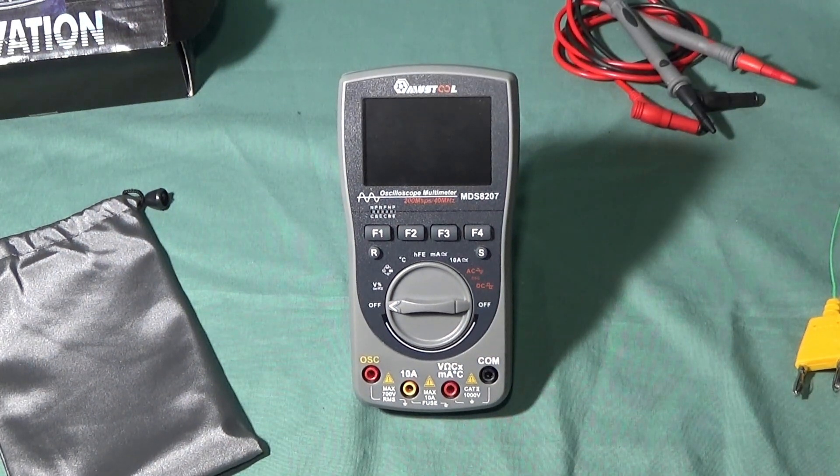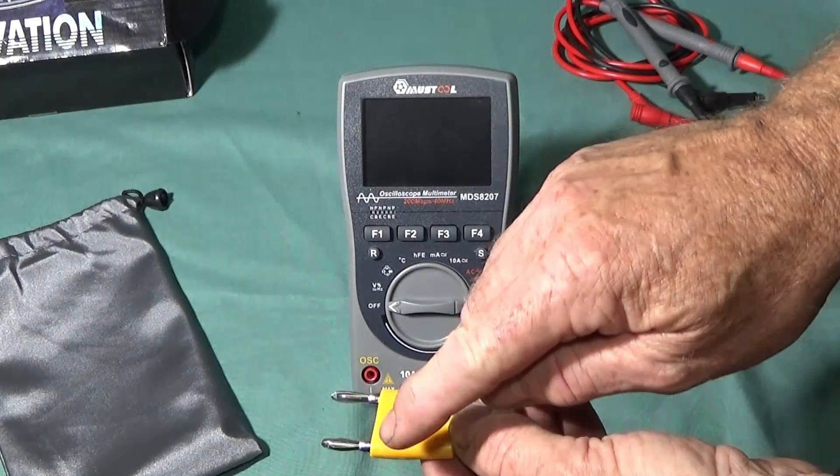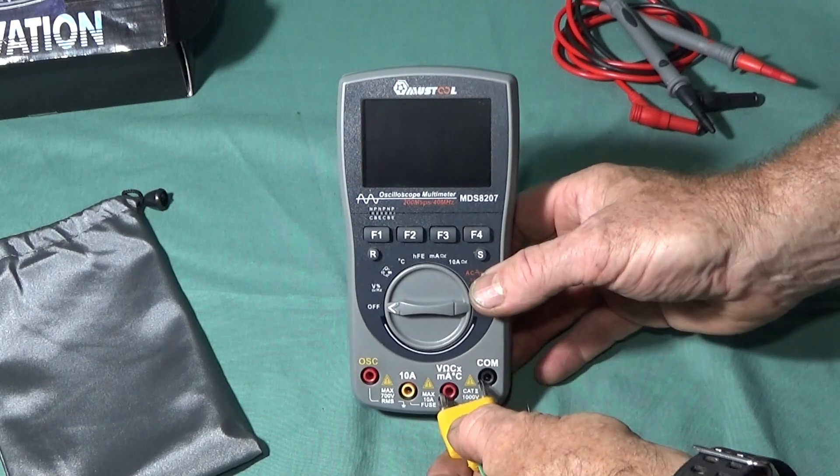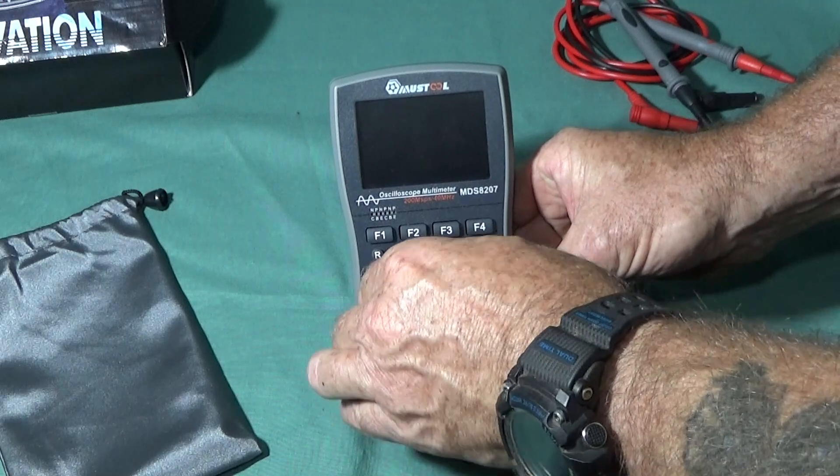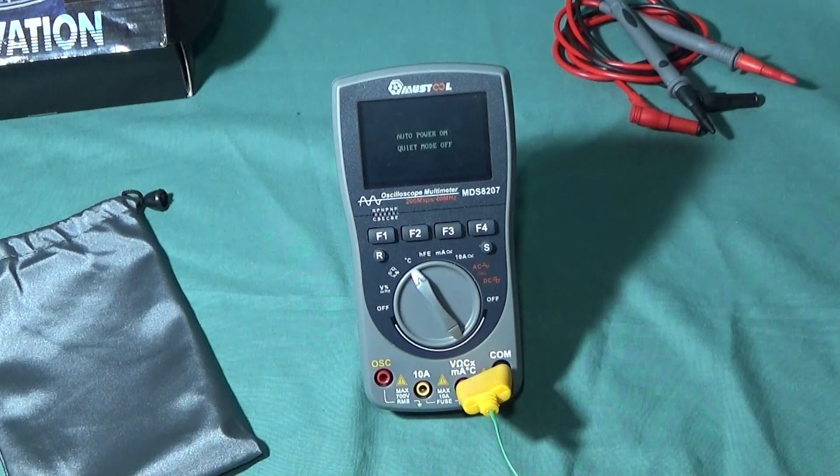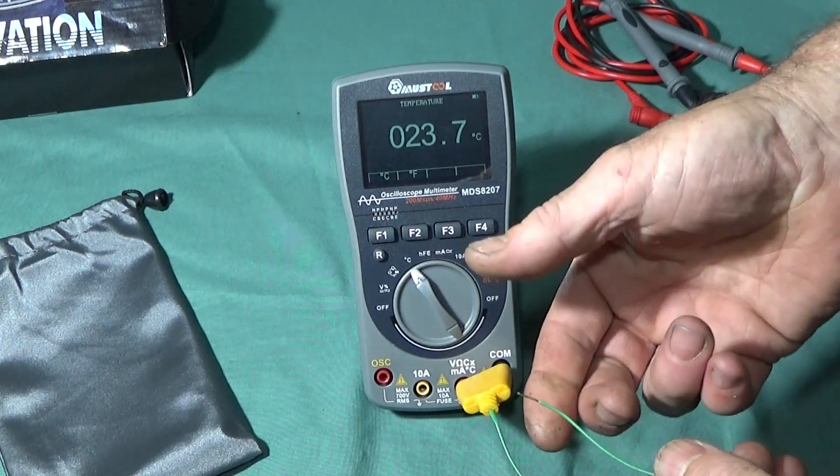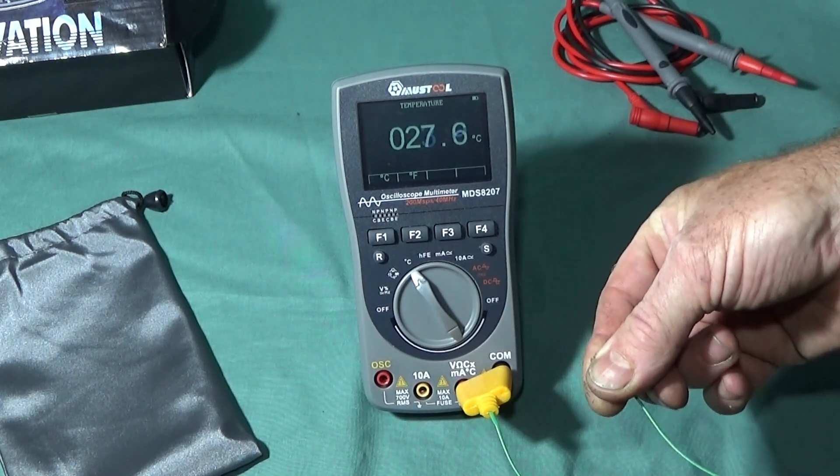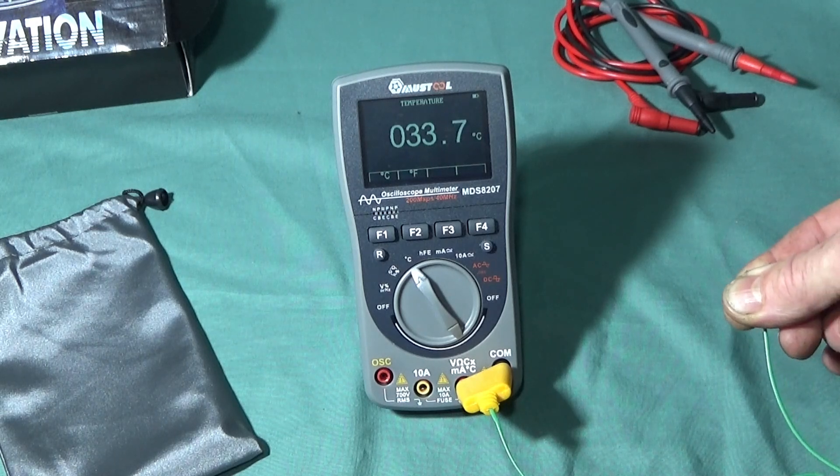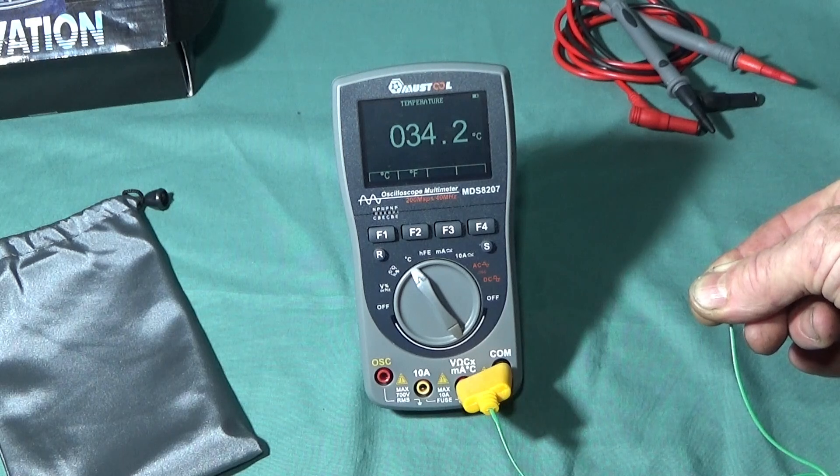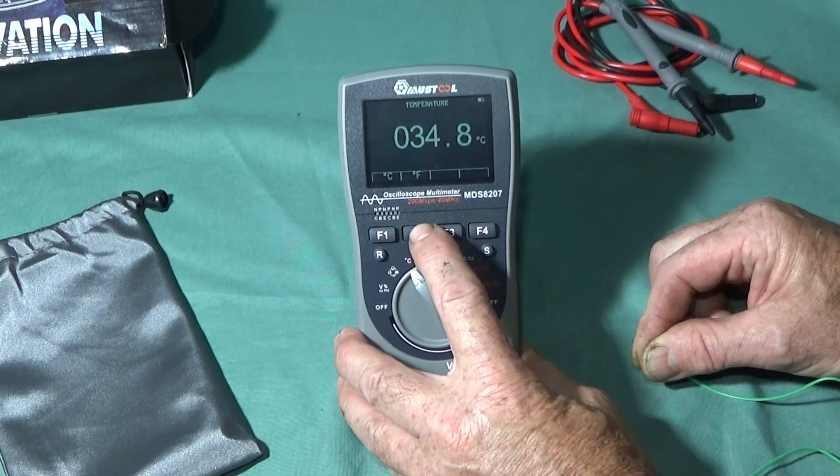Now I can test the thermometer out with the K-type plug. You have plus and minus - minus goes to the common. Then switch up to centigrade, and if I pinch the end of that wire it should measure my temperature. You can also see it in Fahrenheit as well.